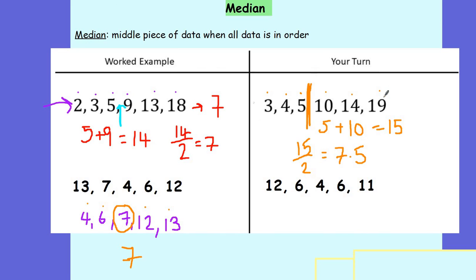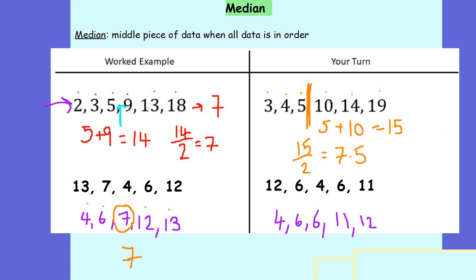For the second one, it's slightly easier because I've only got 5 numbers. If I put them in order to start with: 4, 6, 6, 11, and 12. I now count from each end — 1, 2 — and the middle number is 6. So my median for these values is going to be 6.